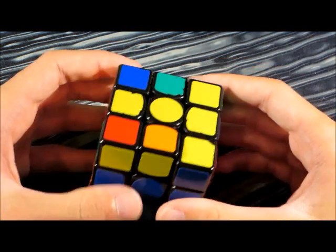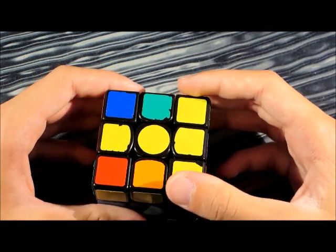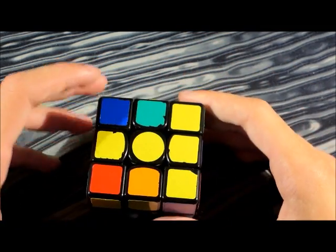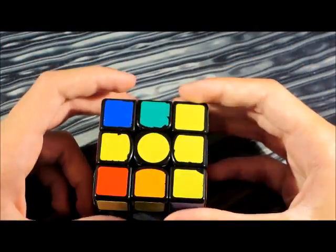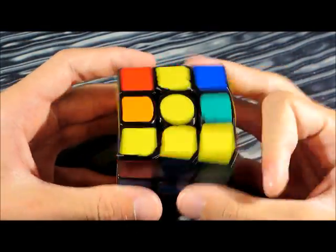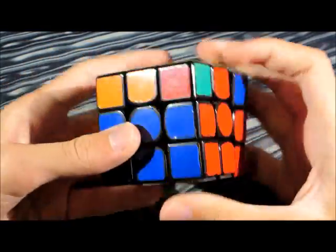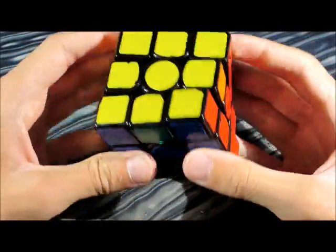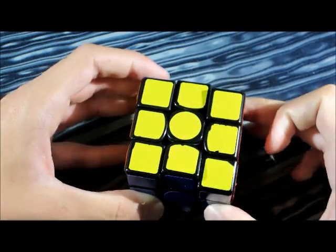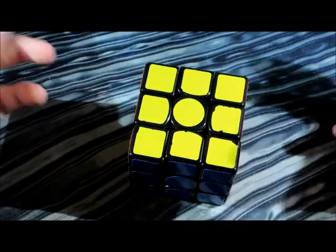So with all that said, let's get to it. The first method is OLLCP. So this method is where you orient all your pieces whilst permuting your corners. And that will give you a corners only case. So instead of doing this OLL like this, we would get a V perm which is not very nice. We can do it like this which permutes all our corners and it gives us a much better PLL.